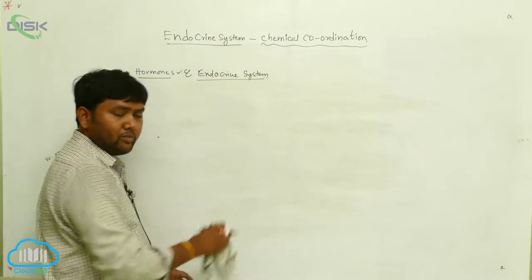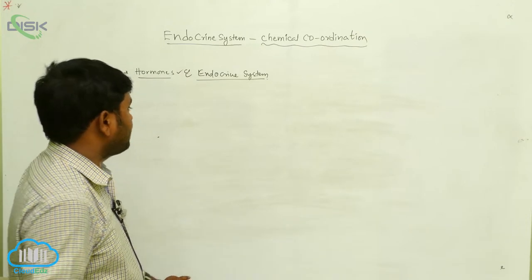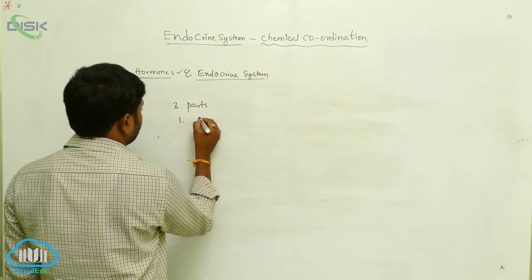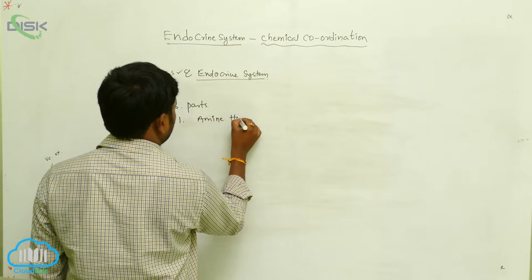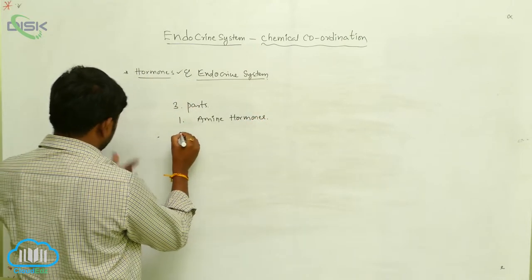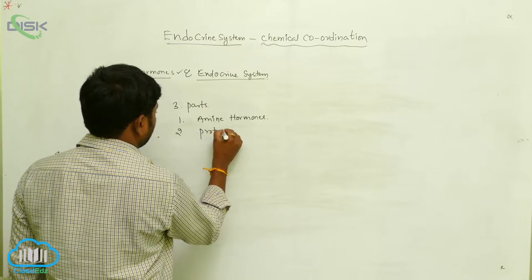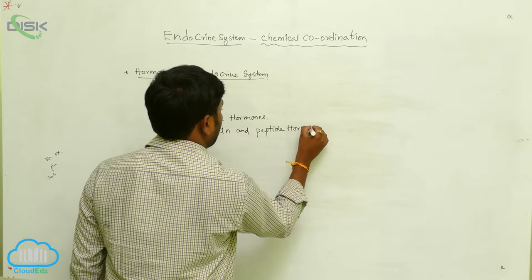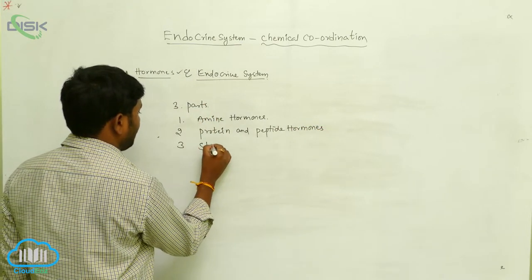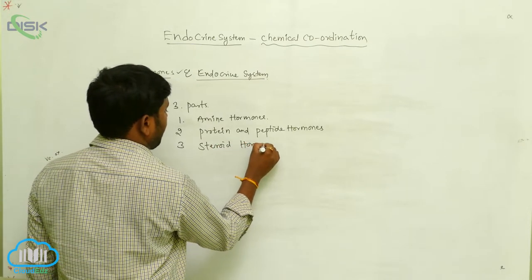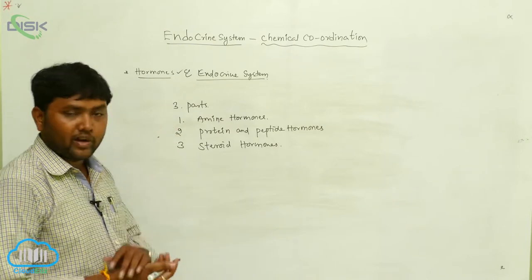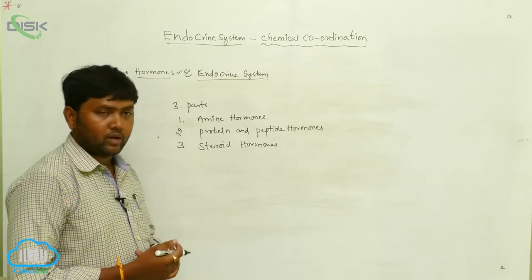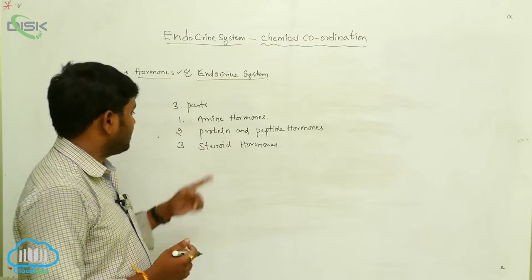On the basis of their chemical nature, hormones are categorized into three parts. The first is Amine Hormones, the second is Protein and Peptide Hormones, and the third is Steroid Hormones.